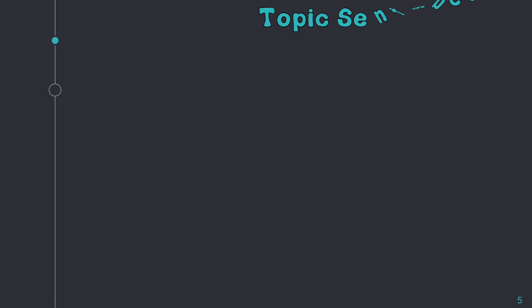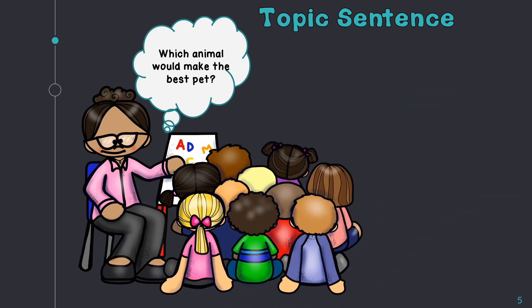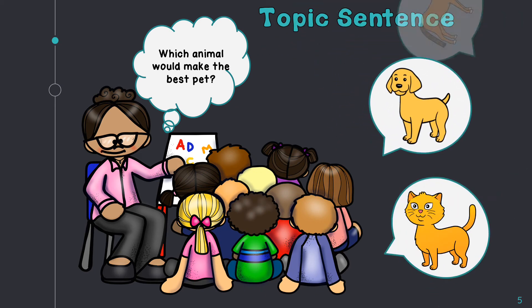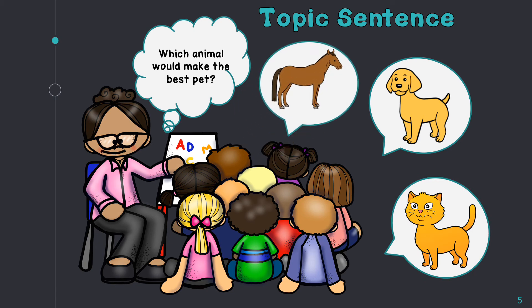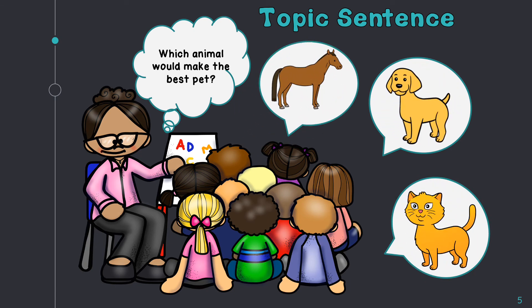After the salutation, an opinion letter needs to begin with a topic sentence. The topic sentence is the main idea or main topic of the letter. For example, if your teacher asked, 'Which animal would make the best pet?' you could probably choose a dog, a cat, or a horse. Choosing one of these animals would be the topic.